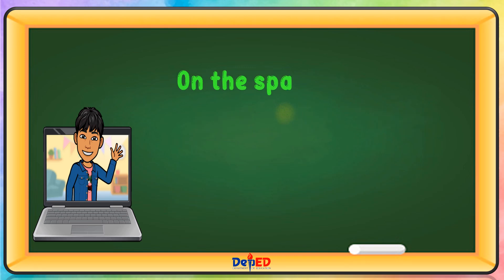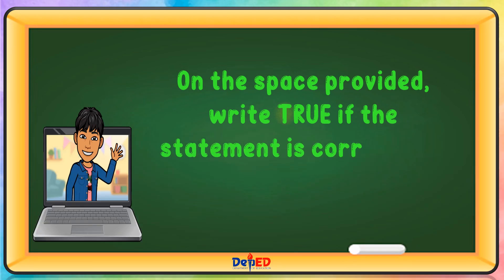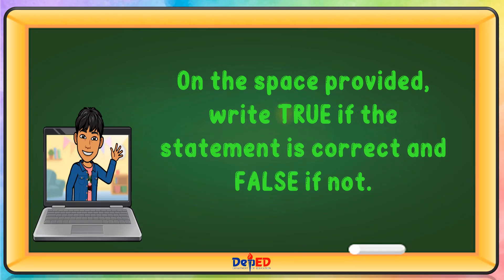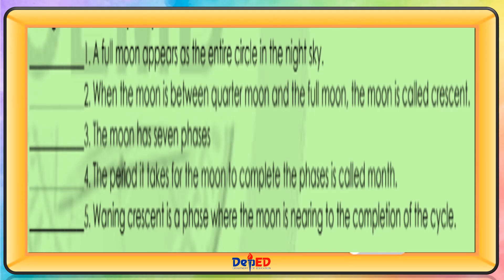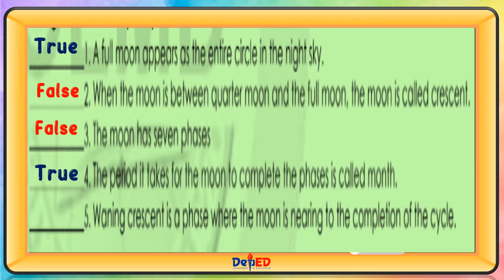On the space provided, write true if the statement is correct and false if not. A full moon appears as the entire circle in the night sky — True. When the moon is between quarter moon and the full moon, the moon is called crescent — False. The moon has seven phases — False. The period it takes for the moon to complete the phases is called month — True. Waning crescent is a phase where the moon is nearing the completion of the cycle — True. Thank you for watching.